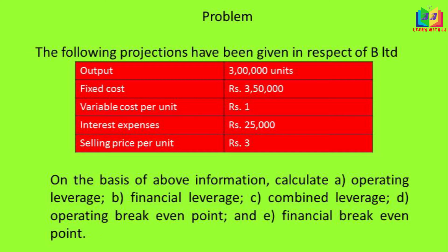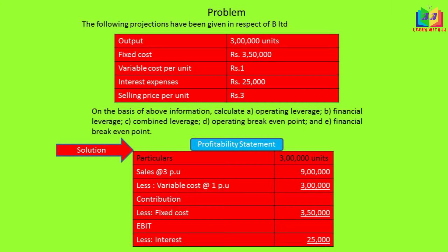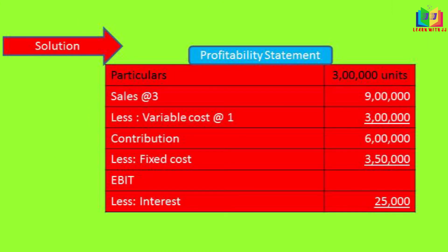Let us start doing this problem. We will write the information in the profitability statement. We have sales at 3 rupees per unit, so for 3 lakh units the sales will be 9 lakh. And variable cost is 1 per unit, so 1 into 3 lakh is 3 lakh. Next we have contribution to find, then fixed cost from the problem, and interest of 25,000.